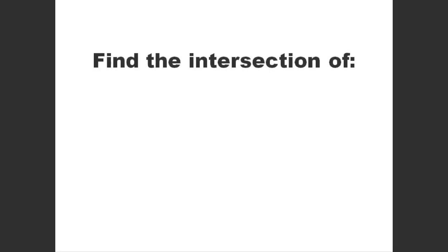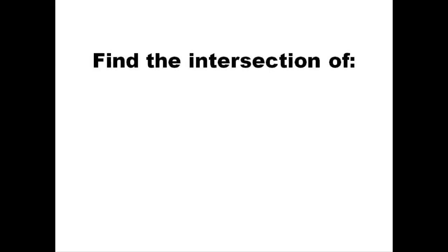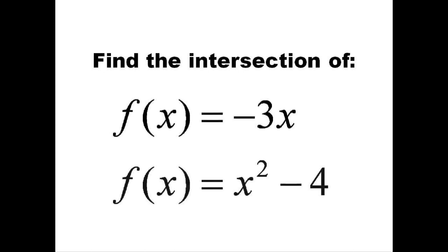In this lesson we're going to take a look at how to solve for the intersection of two functions using your graphing calculator. The two functions we'll use are f of x equals negative 3x and f of x equals x squared minus 4.